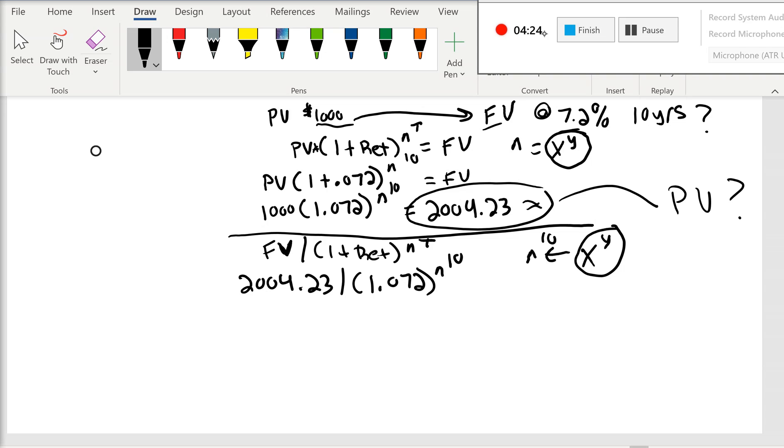But if you're taking a test, most likely you'll have a simple calculator with the X to the Y button. And so when we do this math, we're going to wind up with $999.99. So rounded, it's $1,000. So look at that. That's our present value. This was our future value up here.